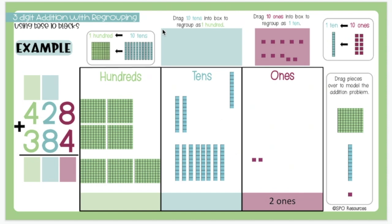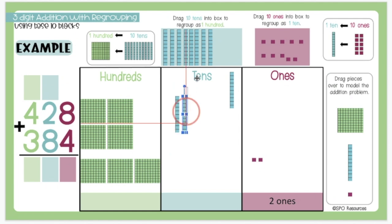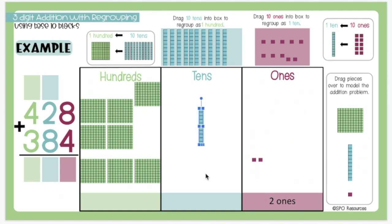Since I have more than 10, I need to move 10 of them up and regroup them as 100. I will move 8 tens up and then I will move 2 more up for 10 tens. And I will move 100 over into the hundreds place to show the 10 tens regrouped as 100.